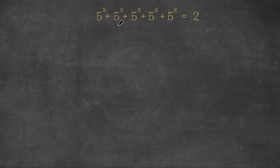So we have 5 to the power of x, plus 5 to the power of x, plus 5 to the power of x, plus 5 to the power of x, plus 5 to the power of x, is equal to 2.